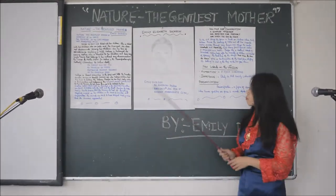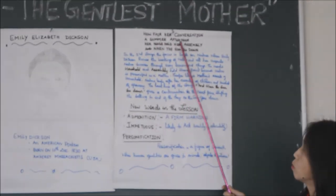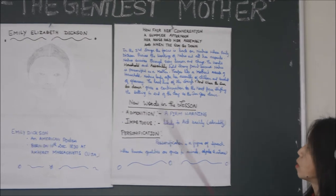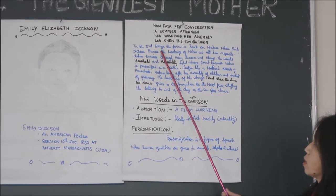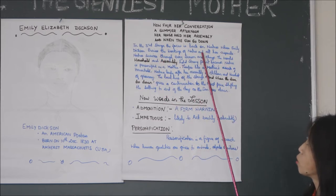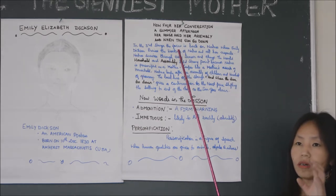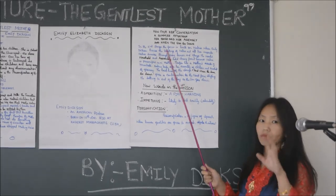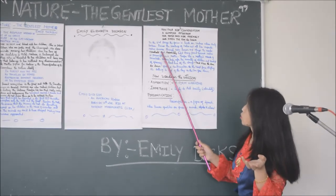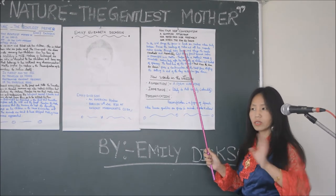The third stanza reads: 'How failed her conversation, a summer afternoon — her households, her assembly, and when the sun goes down.' In the third stanza, the focus is back on nature, where Emily Dickinson praises the working of nature. Nature survives through every season and change — whether winter, summer, or autumn.